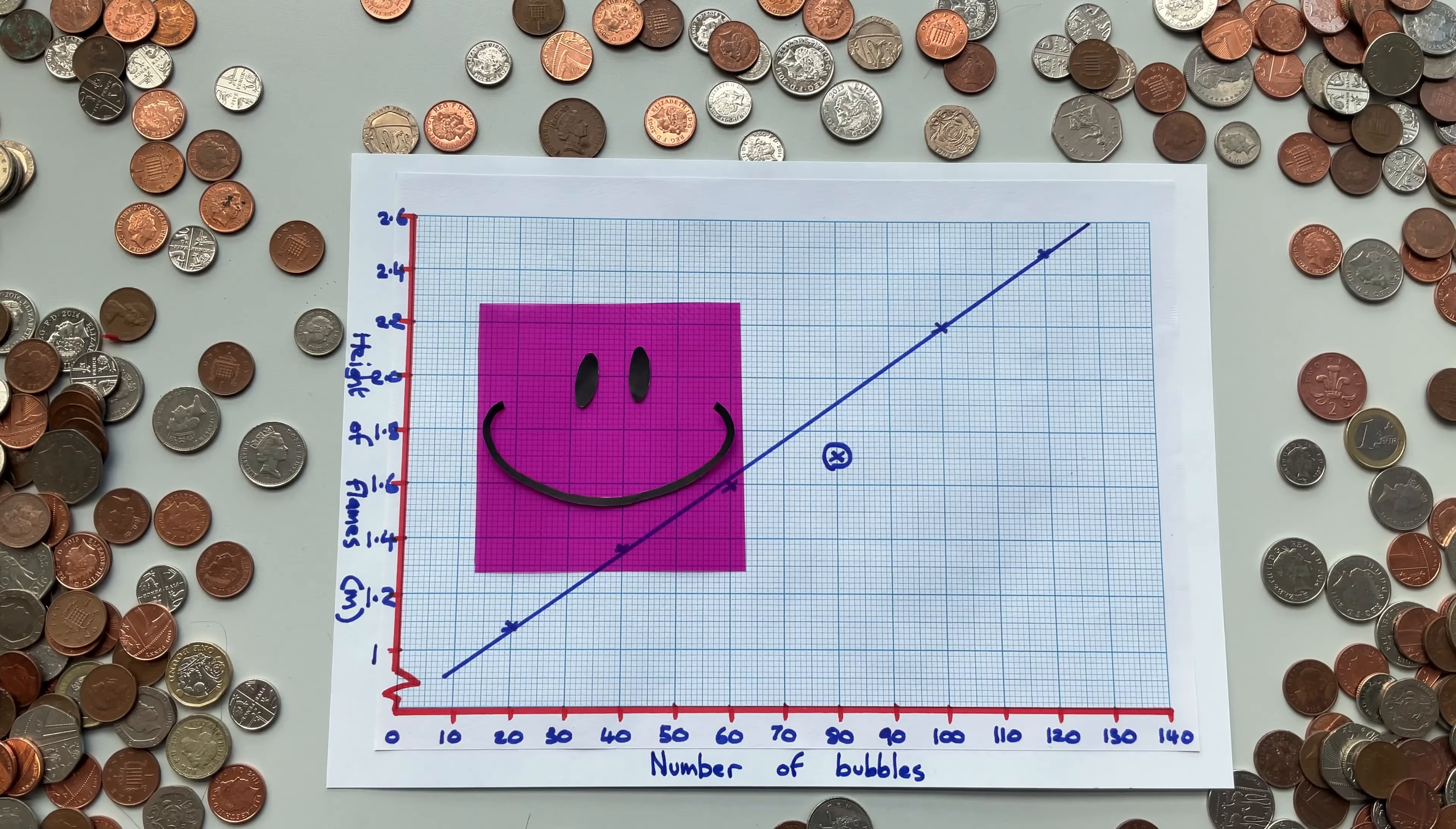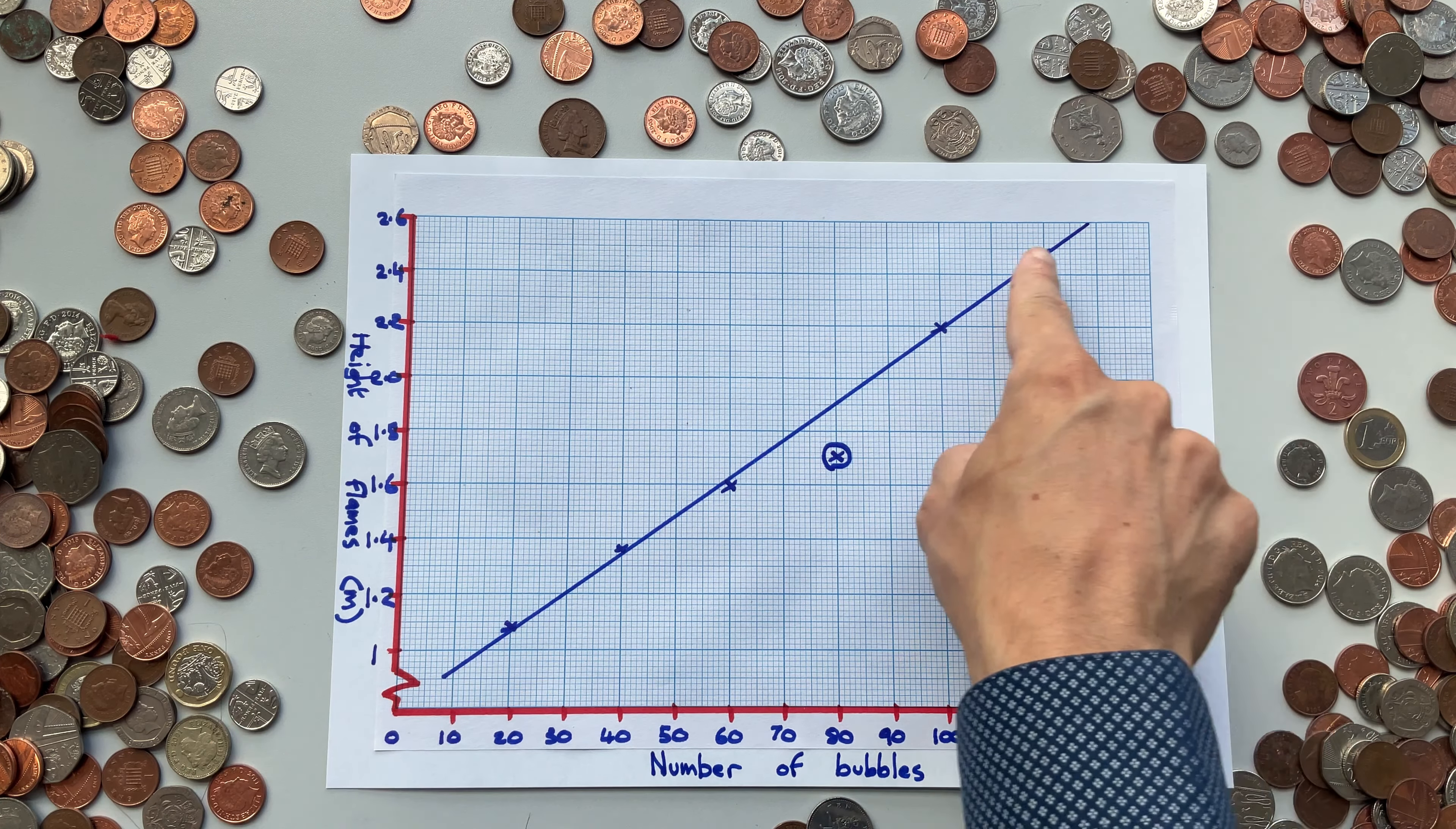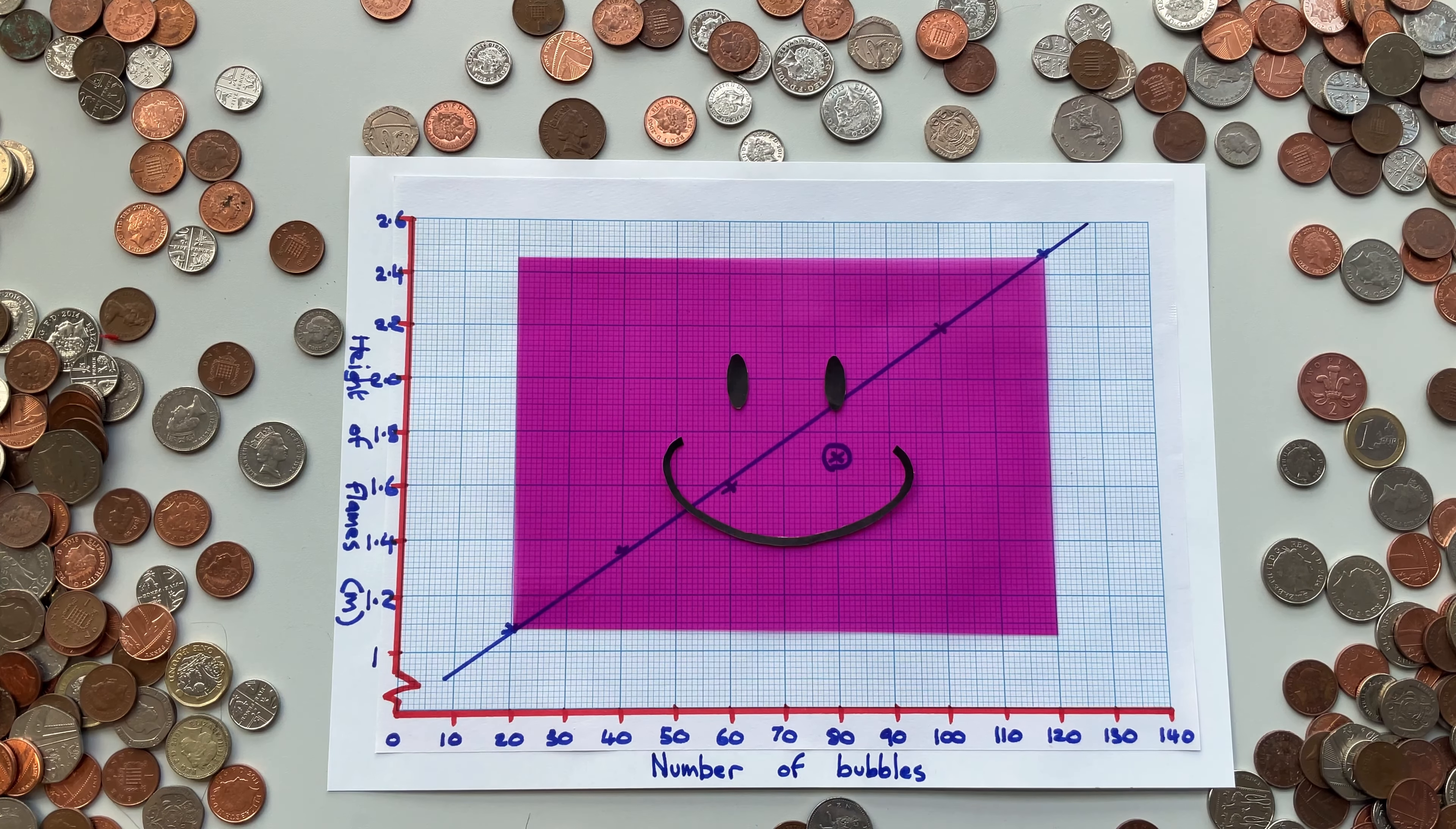But how do you know that you picked the best possible scale? With imaginary squares, of course. You imagine a square that covers all of your points. This normally means the top and bottom corners are from the first and last point that you plotted. Compare the size of your imaginary square to the size of the graph paper. The imaginary square has to cover over half the page.